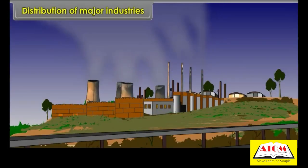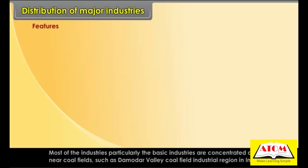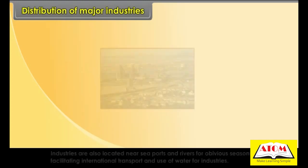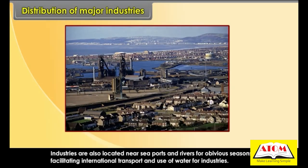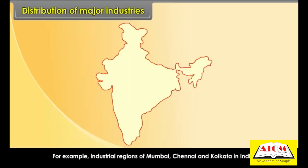Distribution of major industries in the world reveals some interesting features. Most basic industries are concentrated near coal fields, such as the Damodar Valley coalfield industrial region in India. Industries are also located near seaports and rivers to facilitate international transport and use of water, for example the industrial regions of Mumbai, Chennai, and Kolkata in India.